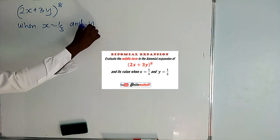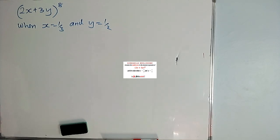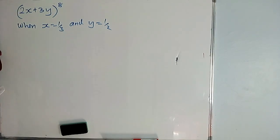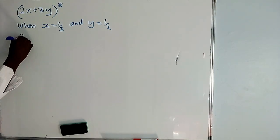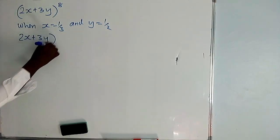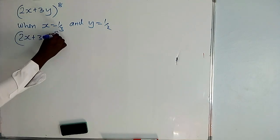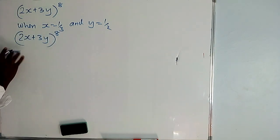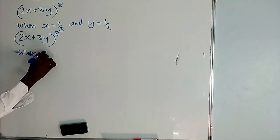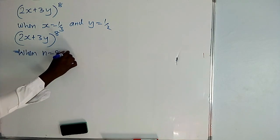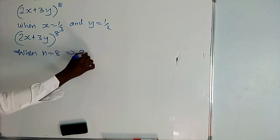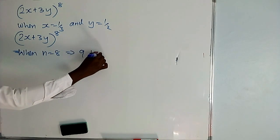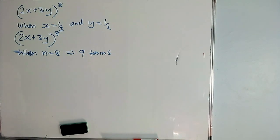So the first thing you need to know is which term is the middle term. When n is equal to 8, the power is 8, it implies we have 9 terms.